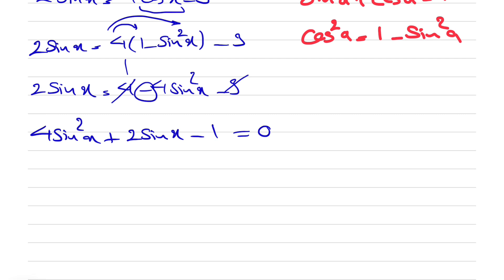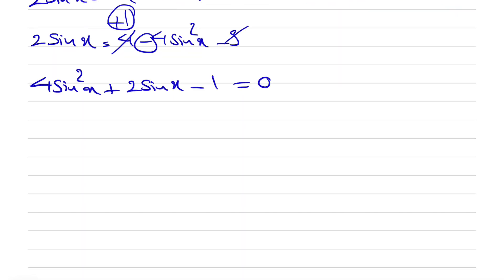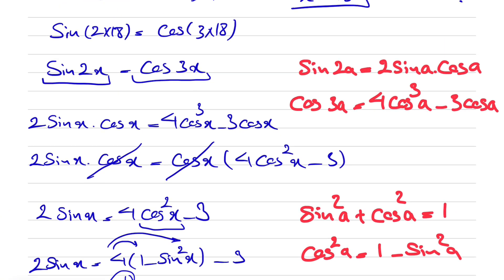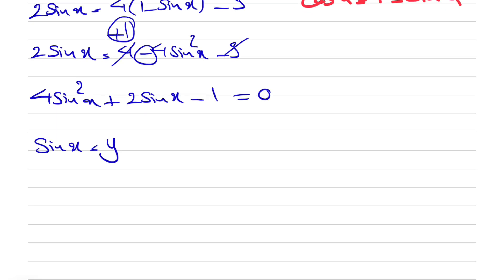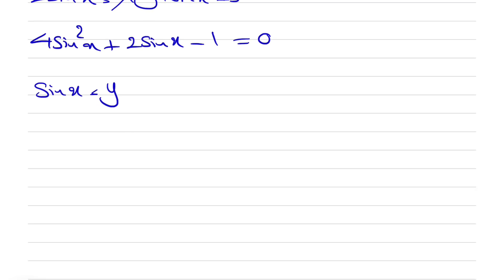Note that the minus 4 becomes positive and the positive 1 becomes negative when moved to the left side. Now we let y equal sine of x. Since we want to find sine of x, finding y is our goal. So we get the equation 4y squared plus 2y minus 1 equals 0.